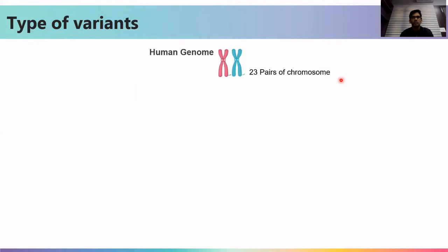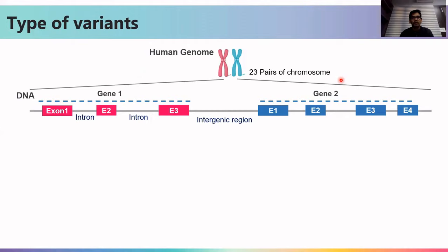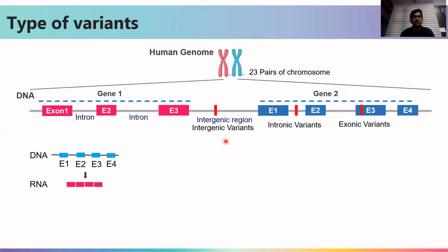There are different types of variants. Looking closely at the chromosome or genome, we find different types of genes. Each gene has exons and introns, and the region between genes is known as the intergenic region. A variant in the intergenic region is an intergenic variant; one in the intronic region is an intronic variant; and one in the exonic region is an exonic variant. Exons are transcribed into RNA and further translated into protein, so any variant in the exonic region will affect protein folding as well as the amino acids the protein is composed of.